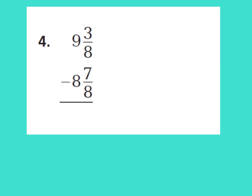We're going to skip question 3 and look at question 4. We're focusing on the even numbers today on the video. For question number 4, I want to subtract 9 and 3 eighths minus 8 and 7 eighths. Step 1 is to subtract my fractional amount. I cannot subtract 7 eighths from 3 eighths, so I'm going to have to regroup so that I can take 7 eighths from 3 eighths. I look at my whole amount — I have a whole to take away.